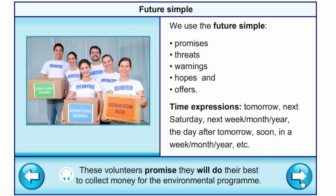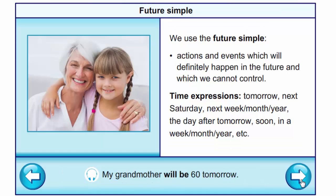We use the future simple for promises, threats, warnings, hopes, and offers. Example: These volunteers promise they will do their best to collect money for the environmental program. Also for actions and events which will definitely happen in the future and which we cannot control. Example: My grandmother will be 60 tomorrow.